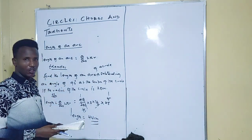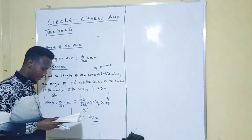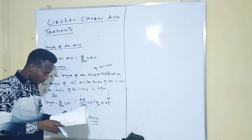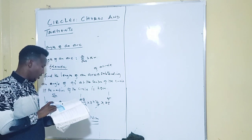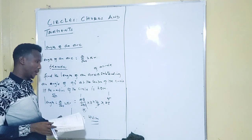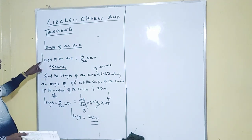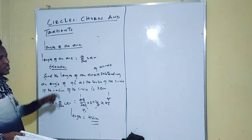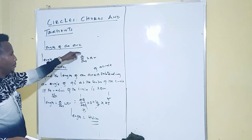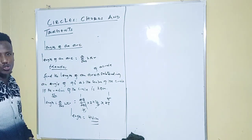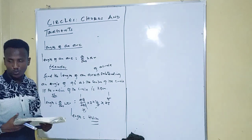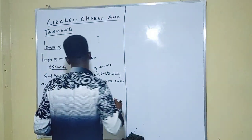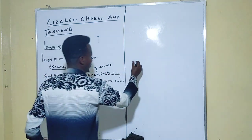So the length equals 44 centimeters. That's how you get the length of an arc subtended by a certain angle at the center with a given radius. In the examination room, theta and r can also be asked. Let's see how to find the radius — Example 2.